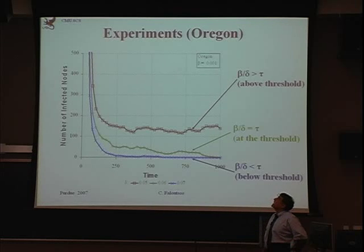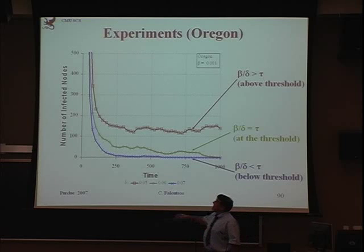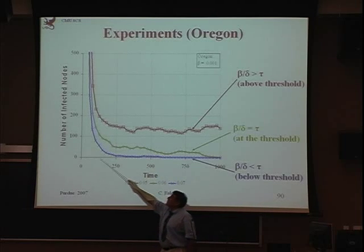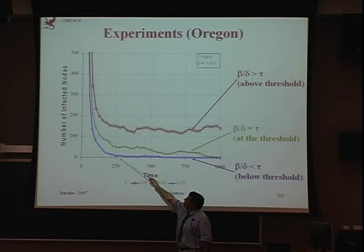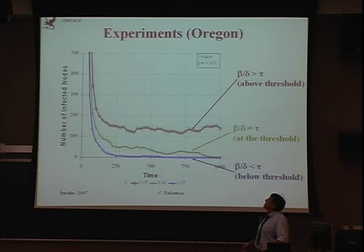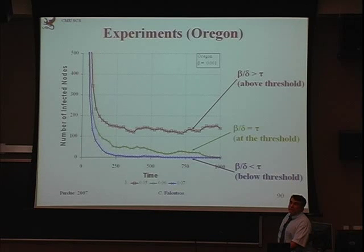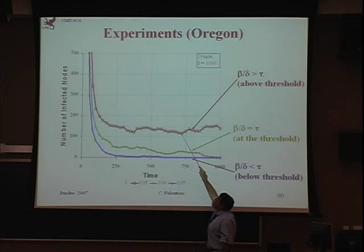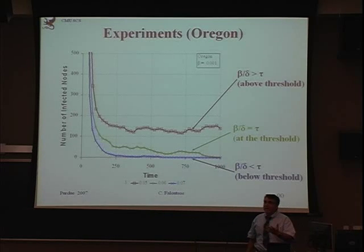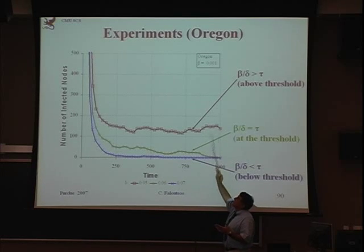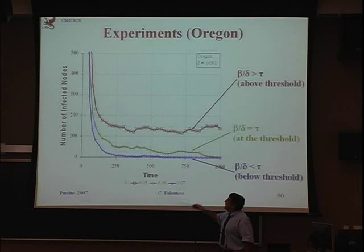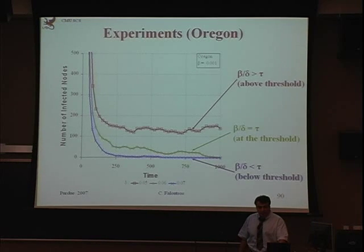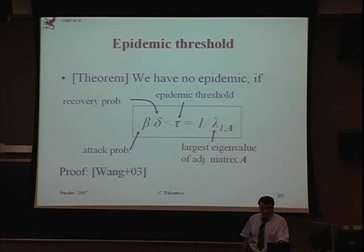Here are simulation results on the Oregon Autonomous Systems network. We start by infecting all nodes at time t=0, then plot the number of infected nodes after 200, 250, 500 time ticks, varying the strength of the virus beta/delta. When above threshold, the population of infected people oscillates but remains roughly constant. When below threshold, everyone heals very quickly. At threshold, infection persists for a long time. This verifies the theorem's derivations.